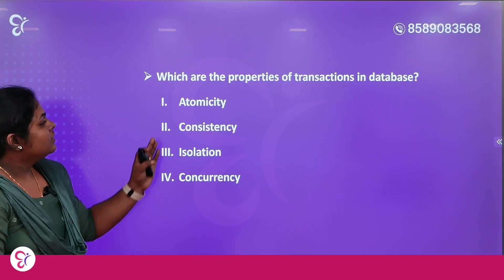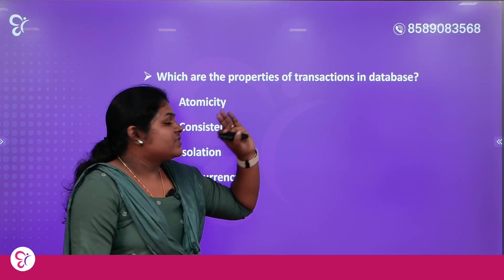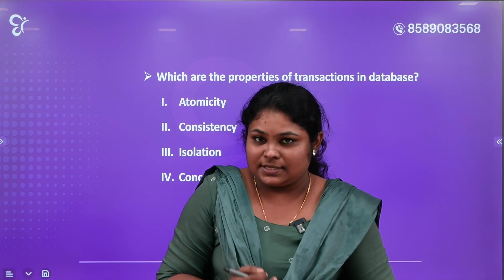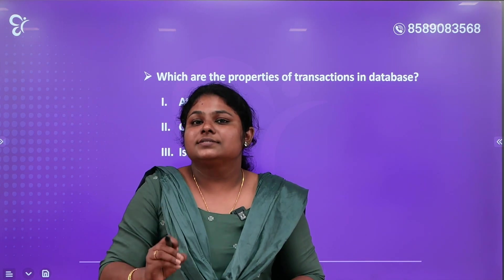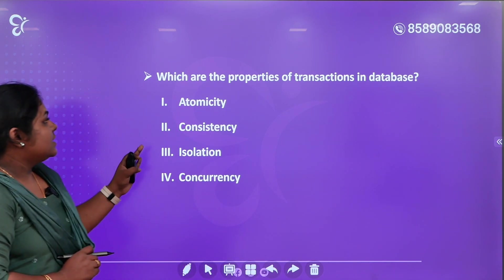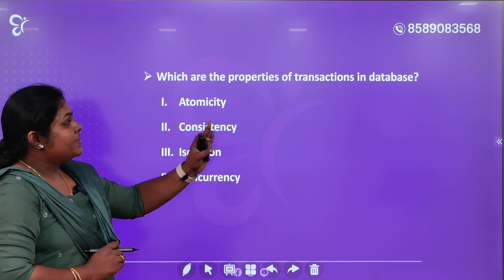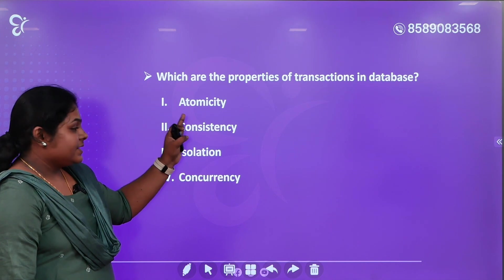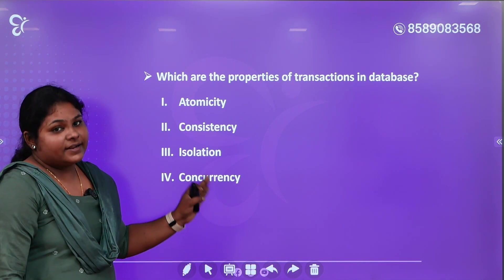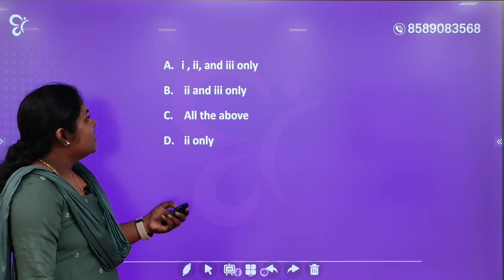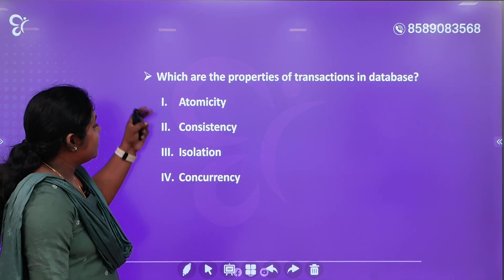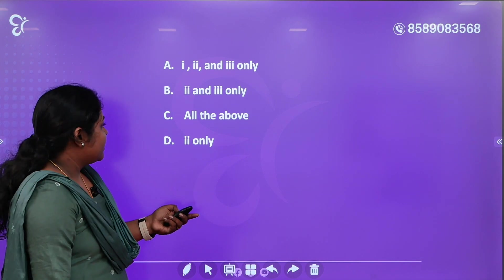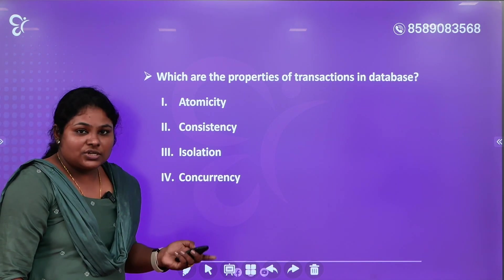Next question: which are the properties of a transaction in a database? We know the ACID properties. The transaction properties are: first, Atomicity; second, Consistency; third, Isolation; and Durability. The answer is 1, 2, and 3 — Atomicity, Consistency, Isolation.